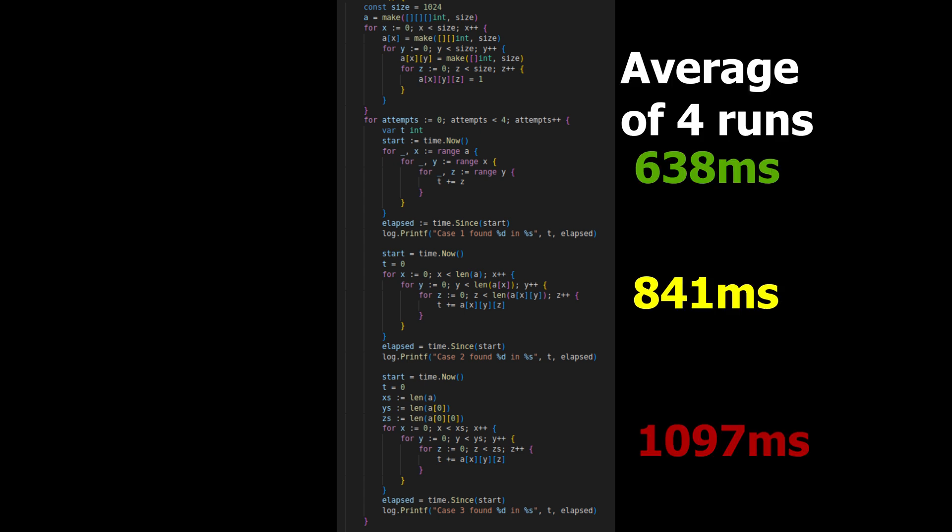After running the tests, it's obvious that the Go compiler has some optimizations around the range statement, such that it's not only the clearest to read, but also the fastest to execute.